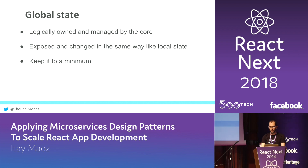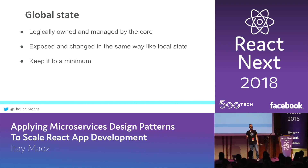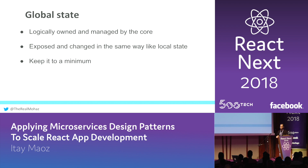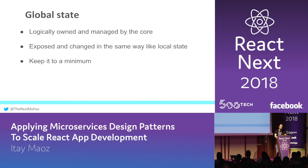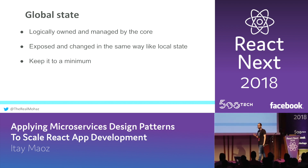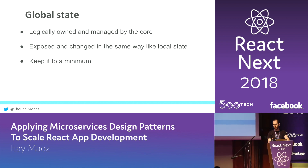The other type of state is global state. Global state isn't really different from local state — the only difference is it is logically owned by no single package, because there isn't really a package that is the sole owner of routing or identity, for example. The core layer of the app needs to maintain and manage it. I highly recommend keeping global state to a minimum, because once a lot of packages and components rely on a piece of state, it becomes really hard to change it and it can be a source of weird bugs.